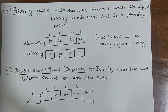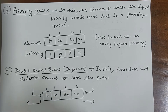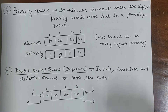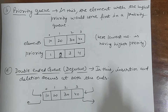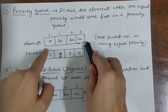We are not considering the first-in first-out case. We are considering the data based on their priority. The element with the highest priority will come first. These are the priorities and this is the queue — the element with the highest priority will be placed at the front of the queue.